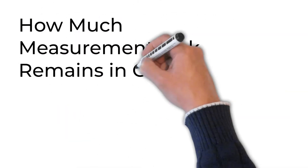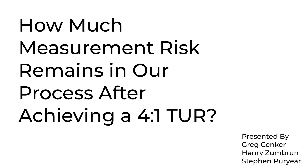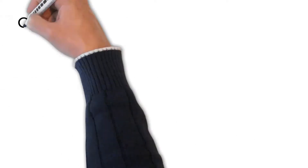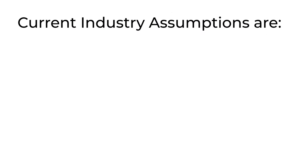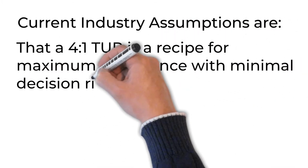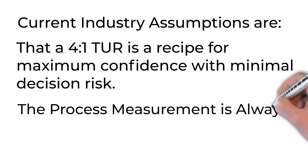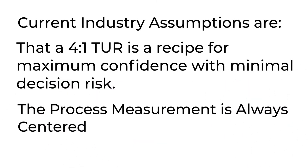How much measurement risk remains in our process after achieving a 4-to-1 TUR? Current industry assumptions are that a 4-to-1 TUR is a recipe for maximum confidence with minimal decision risk, and that the process measurement is always centered. We are going to disprove these assumptions by showing the true risk associated with a 4-to-1 TUR, as well as discuss why the location of the measurement matters.